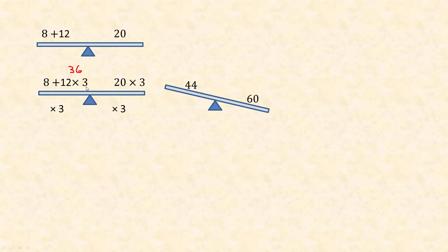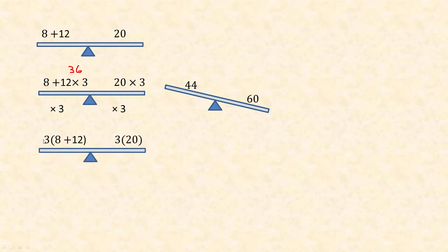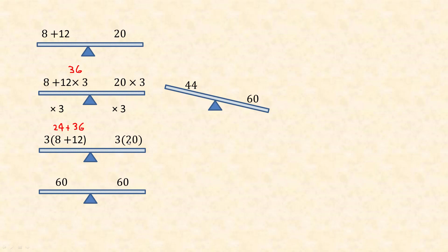In order to multiply both sides by 3, I have to multiply everything on both sides by 3. So I put the 8 plus 12 in brackets: 3 times 8 is 24, plus 3 times 12 is 36. It's still balanced because 24 and 36 add to 60, just like 3 times 20 is 60. Whatever you're doing — multiplying or dividing — you have to do it to everything on that side, not just part of it.